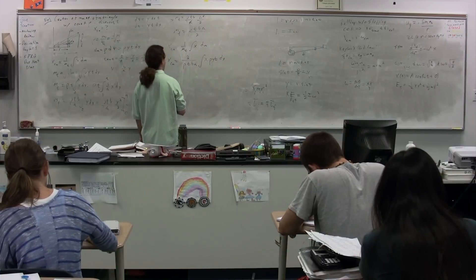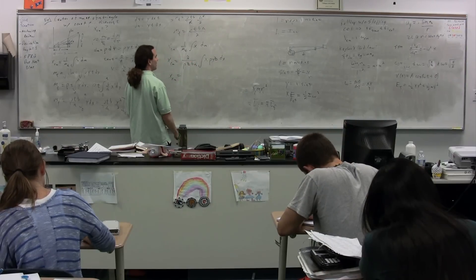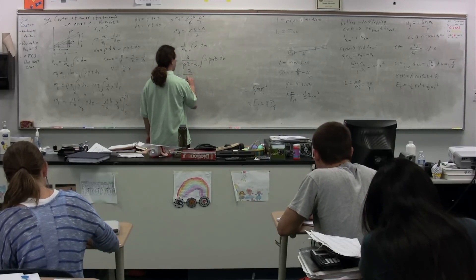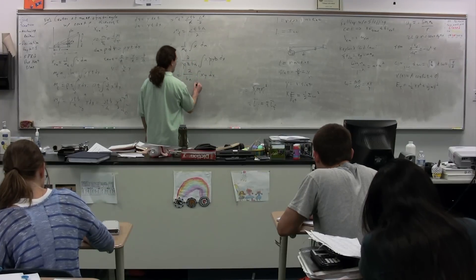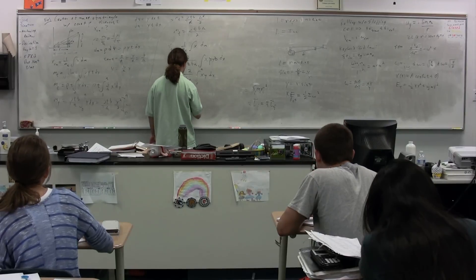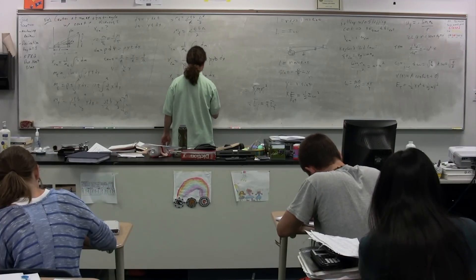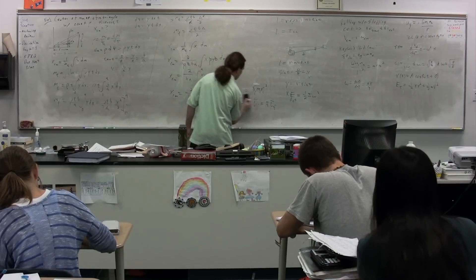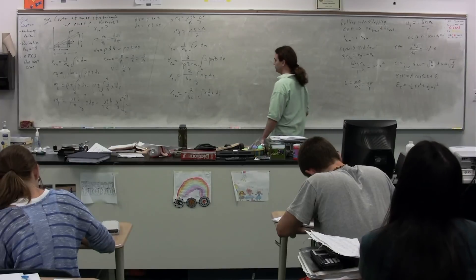Again, we have x center of mass. Thickness cancels out. We can cancel that out. We can cancel out, as well, rho, the density. So we have two over b, a, integral of x, y, dx. We're basically doing the same thing. We have the x varies from zero to a. The x center of mass is going to be equal to two over b, a, integral of. We can substitute for y. We have y is b over a times x dx.